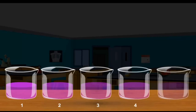What did you observe? You will observe that as soon as the KMnO4 is added to the first beaker, it becomes violet in color. Now as the solution is repeatedly diluted, the intensity of the color gradually decreases.